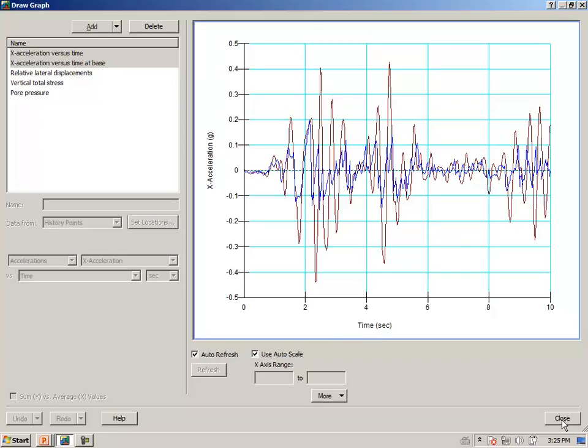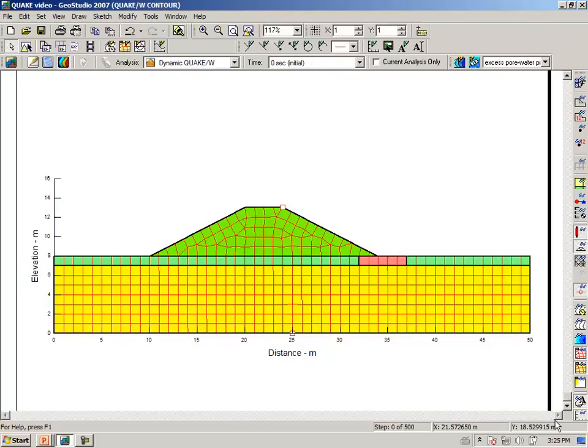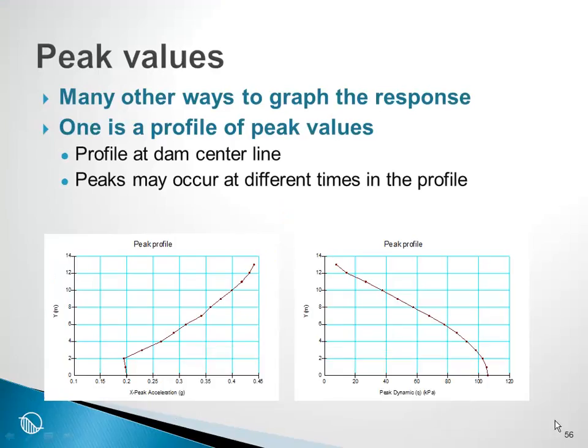We can compare at every particular point the input motion with the response at the crest. This is one of the better ways of looking at ground response, comparing a particular point like the crest with the actual input of the time history record. There are many other ways to create graphs of the response. One that is frequently created is profiles of peak values.